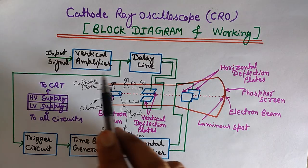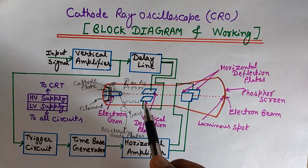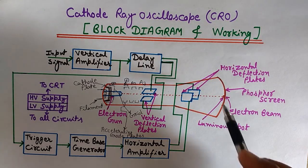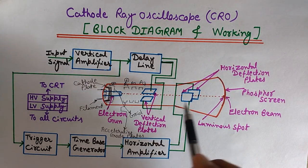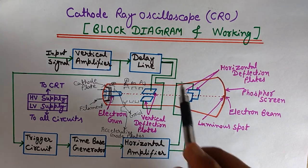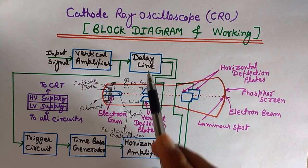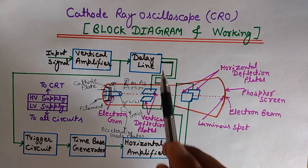If the signal doesn't reach the vertical and horizontal deflection plates at the same time, there will be a phase difference and the correct waveform will not be shown on the screen. So it is very important that the signal reaches both deflection plates simultaneously. We choose the delay time for the delay line equal to the delay produced by the trigger circuit and time base generator blocks.